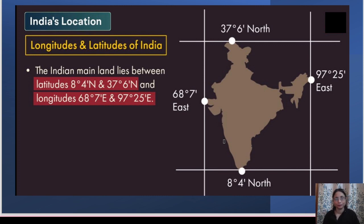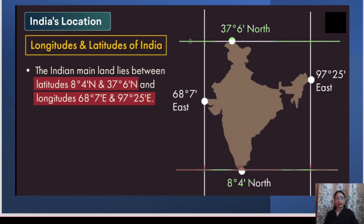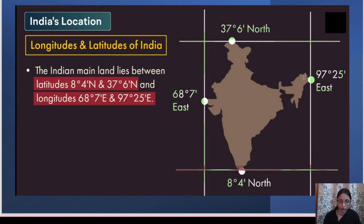India's mainland lies between latitudes 8°4' North to 37°6' North — these are the horizontal latitudinal lines. And in terms of longitude, India lies between 68°7' East and 97°25' East.